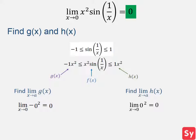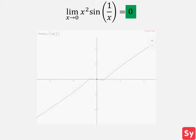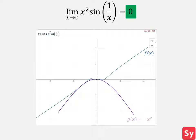Let's see a graph to better understand. We see f on the graph. Now we'll add g and h on the graph. We can see all three functions approach 0 as x approaches 0.